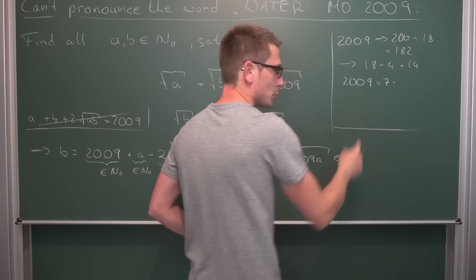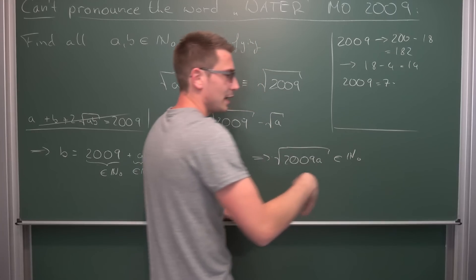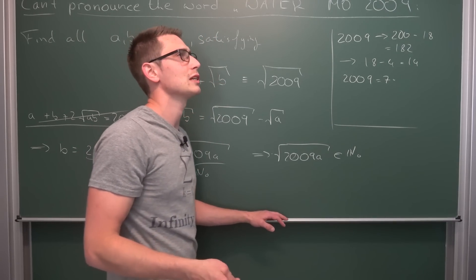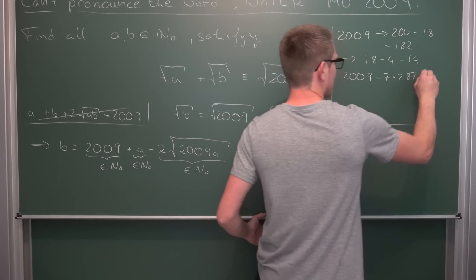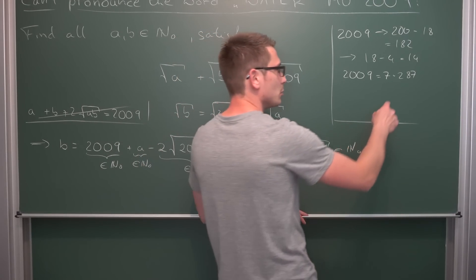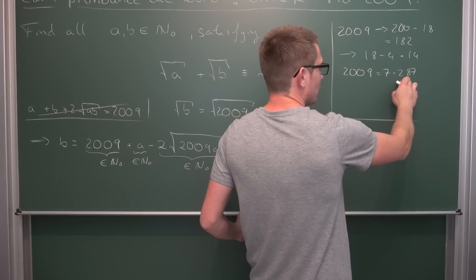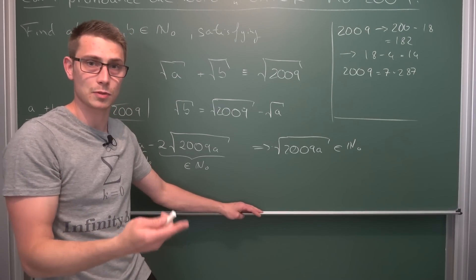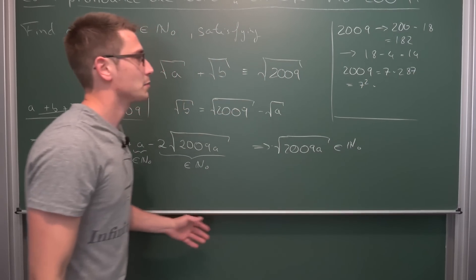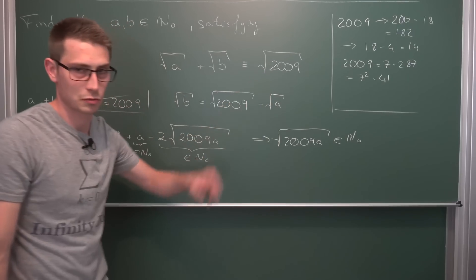Now 287 is our remaining factor. It's not divisible by 2, 4, 6, or 5 — and since the original number was not divisible by 3, neither is 287. Is it divisible by 7 again? Yes: 280 is 7 times 40, and 7 remains, which is obviously divisible by 7. So 287 is also divisible by 7. That gives us 7 squared times: 280 divided by 7 is 40, plus 1 gives 41. We got our prime factorization — 41 is indeed a prime number. So 2009 equals 7 squared times 41.